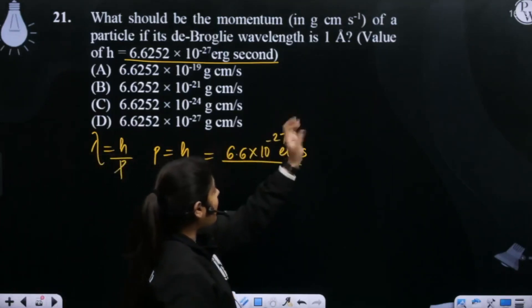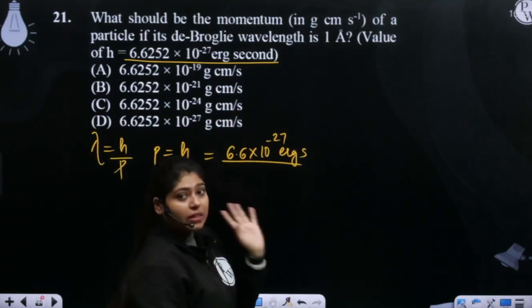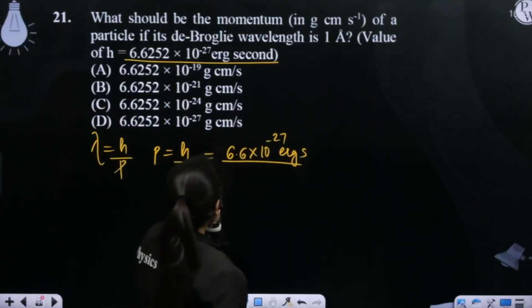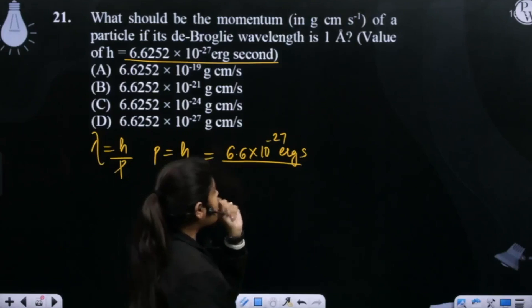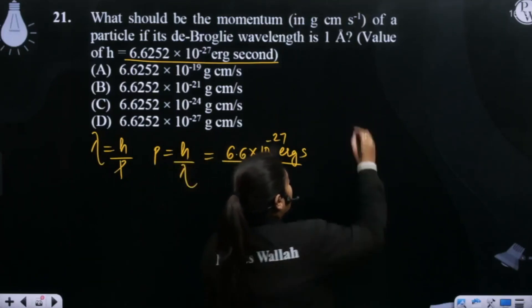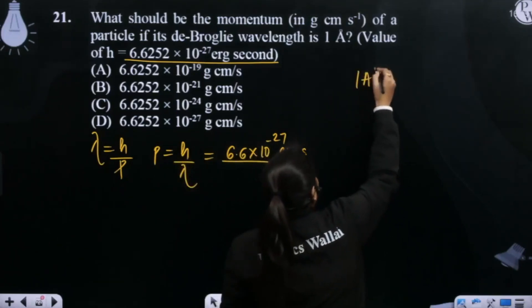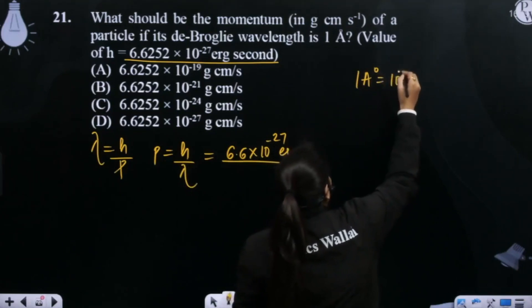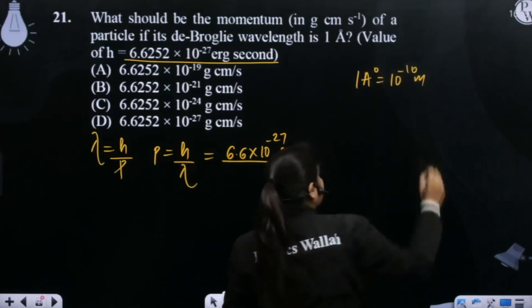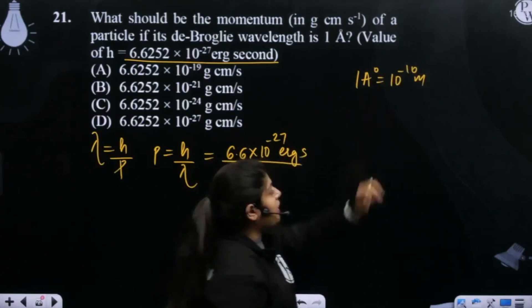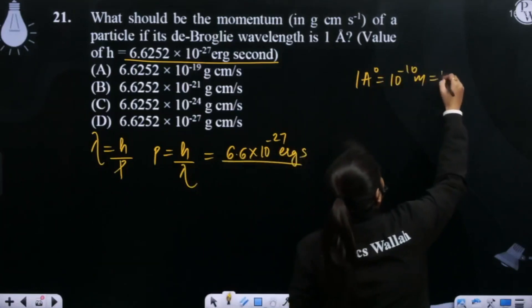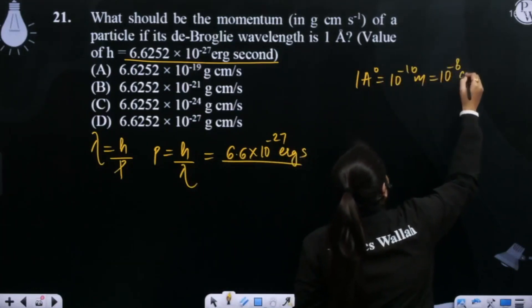Now, the answer is the wavelength of angstrom. The answer is given by centimeter, gram centimeter. Okay. 1 angstrom, how much is it? 10 to the power minus 10 meter. How much centimeter is equal? 10 to the power minus 8 centimeter.